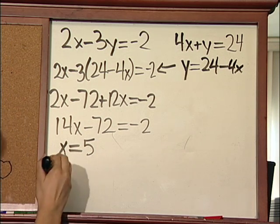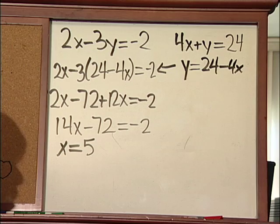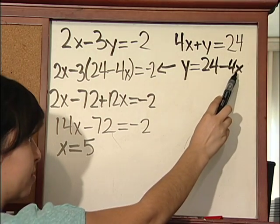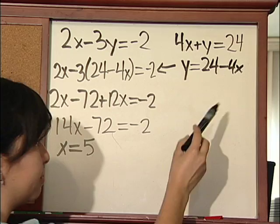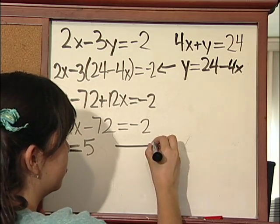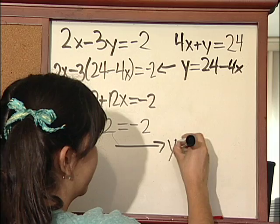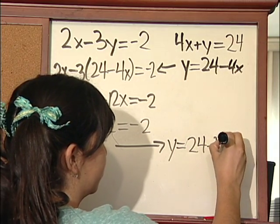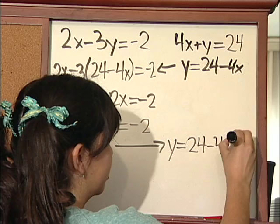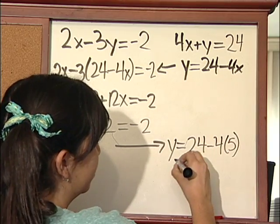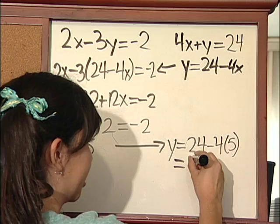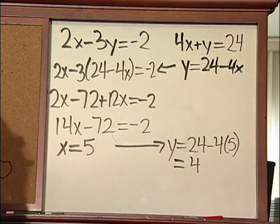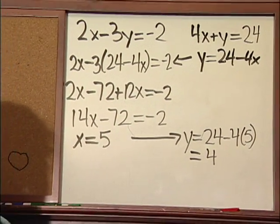Since x is 5, we're going to plug in 5 for x into the second equation. So it's going to be y equals 24 minus 4 times 5, and we would get 4. So that is how we would use the substitution method.